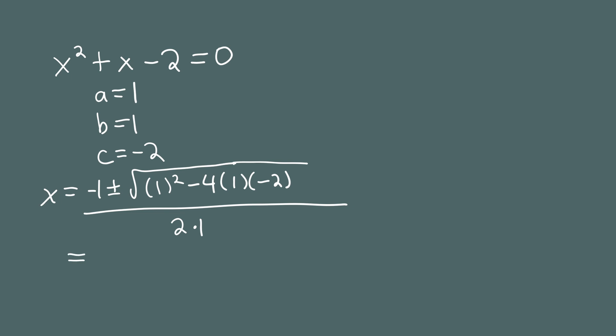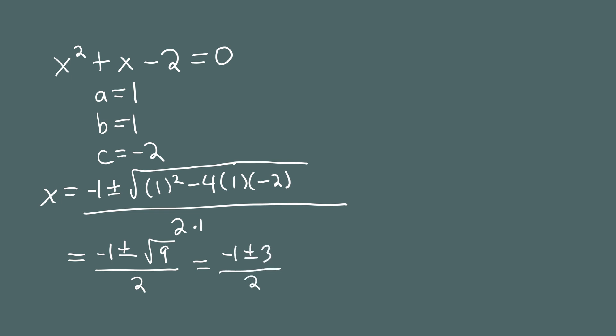Let's quickly compute the two answers. We have negative 1, plus or minus the square root, and the number under the radical is 1 minus negative 8, which is 9. Now the square root of 9 is 3, so the two answers are negative 1 plus or minus 3 over 2. If you do this with a plus sign, you get 1, and with a minus sign, you get negative 2. So the two solutions are 1 and negative 2. The discriminant is the number under the radical, which here is 9.